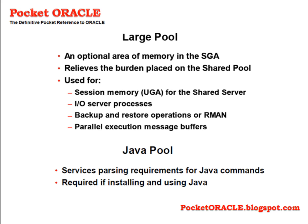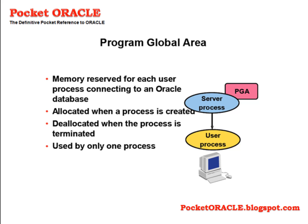The sizing of SGA memory structures is critical for performance. In general, they should be large enough but not too large. In addition to wasted memory, performance can degrade if too much memory is assigned to the SGA components. The program global area (PGA) is the memory reserved for each user process connecting to an Oracle database. It is allocated when a process is created and deallocated when the process is terminated, and is always used by only one process.